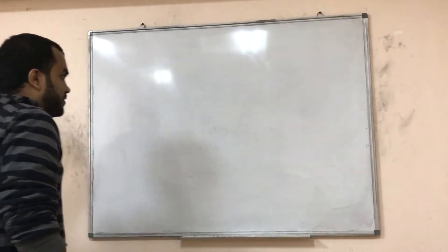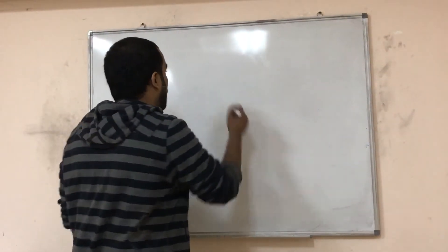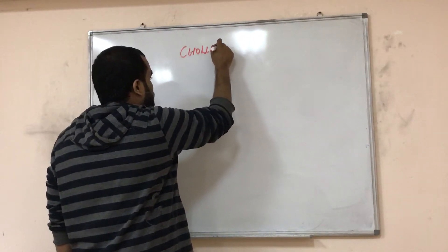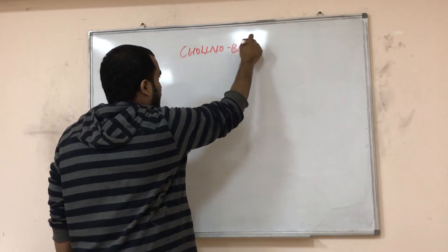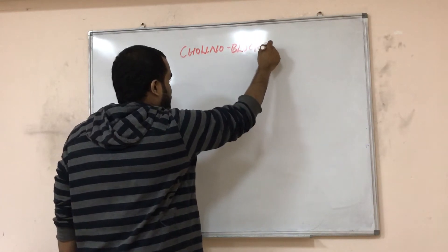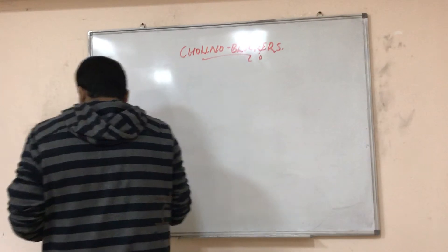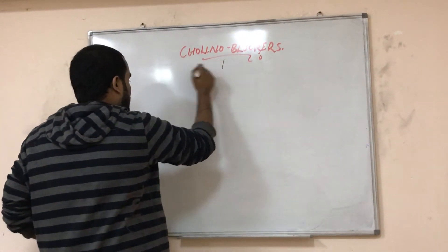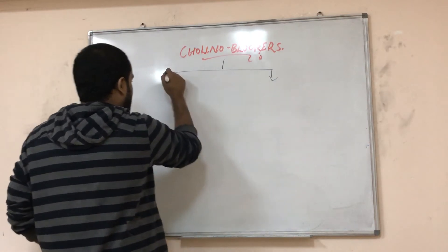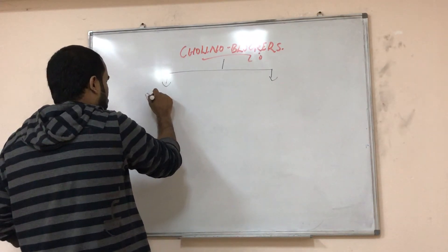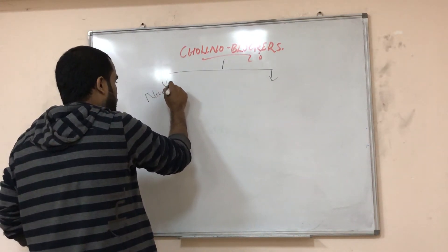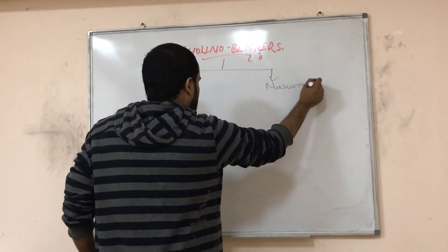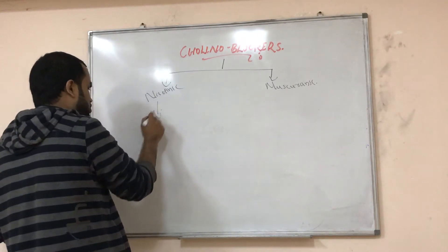Now we are moving to the next group of drugs called cholinoblockers. You can classify them into two groups: we have muscarinic and nicotinic blockers, as you will study for mimetics also. First we will study about nicotinic, which is of two types: NN nicotinic neural, and NM nicotinic muscular.